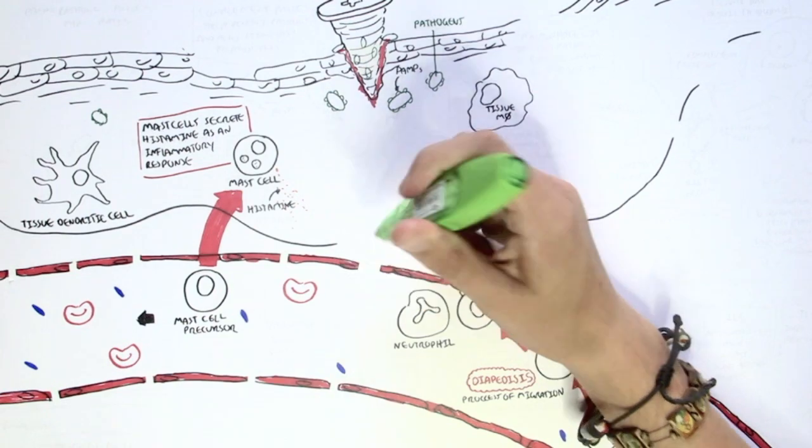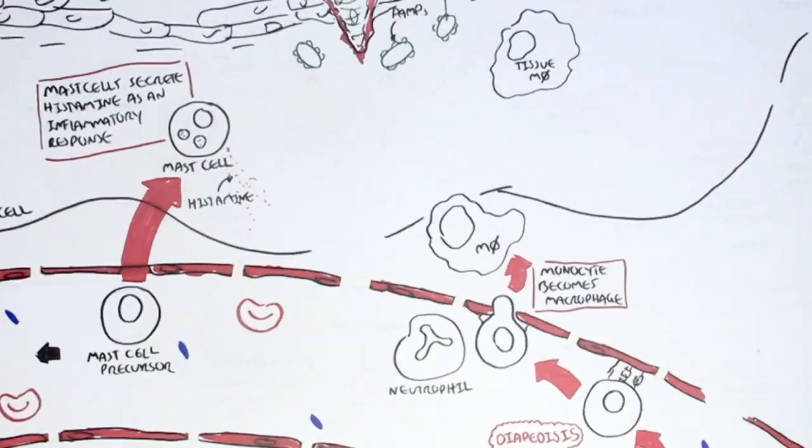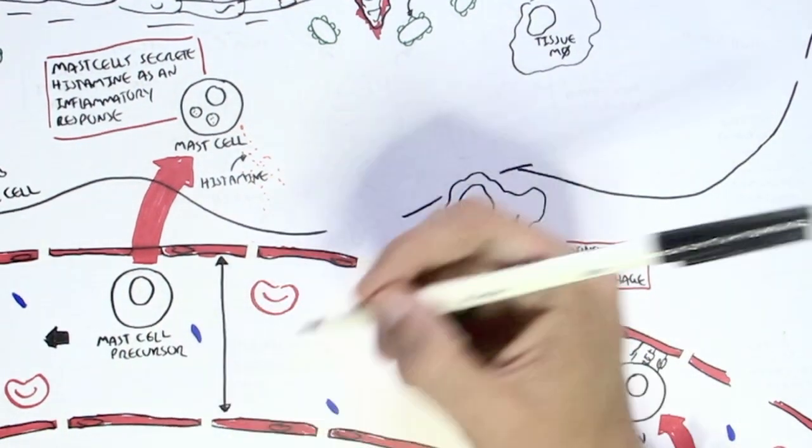Histamine, what will it cause? It will cause vasodilation and increase the vascular permeability of the blood vessels.